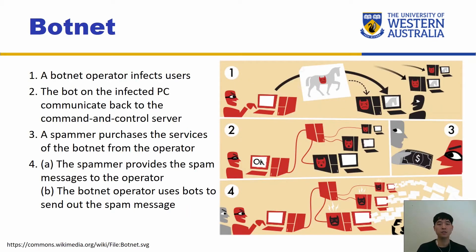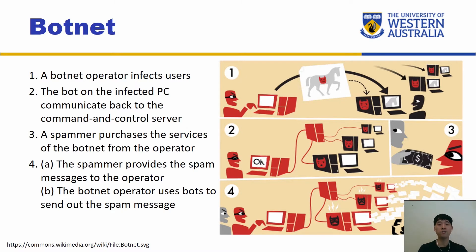There is a botnet diagram here. Basically, a botnet operator infects users first — you can see there's a Trojan that gets used to infect people. As mentioned in the previous video, a Trojan is not going to interact with people, it's not going to try to spread or anything — it just sits until it's told what to do. The bot on the infected PC communicates back to the command and control server, which ensures the bots are ready to roll when needed.